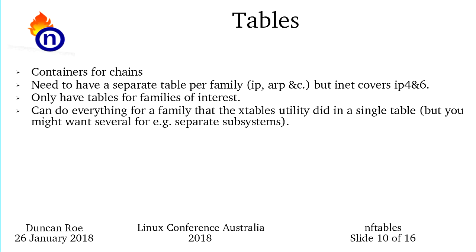There's a new INET table family, so you can have one table covering both IPv4 and IPv6. Some rules are specific to one or the other, such as when you give IPv4 addresses — but ports are common between them. You only need tables for families of interest. If you're not doing anything with ARP or IPv6, you don't have to have an IPv6 table. You can do everything for a single family that the corresponding iptables utility did, and you can have multiple tables.